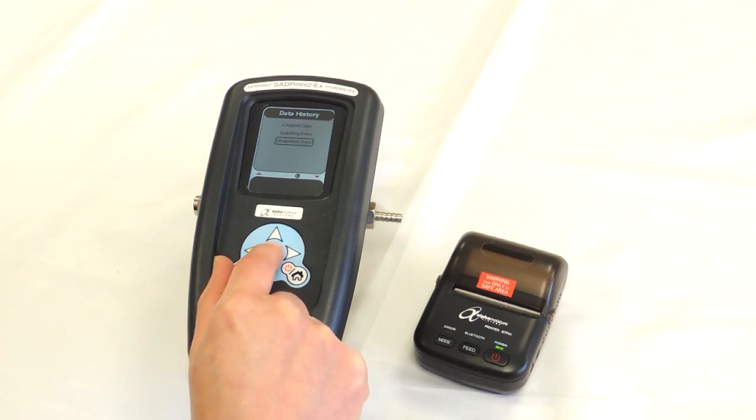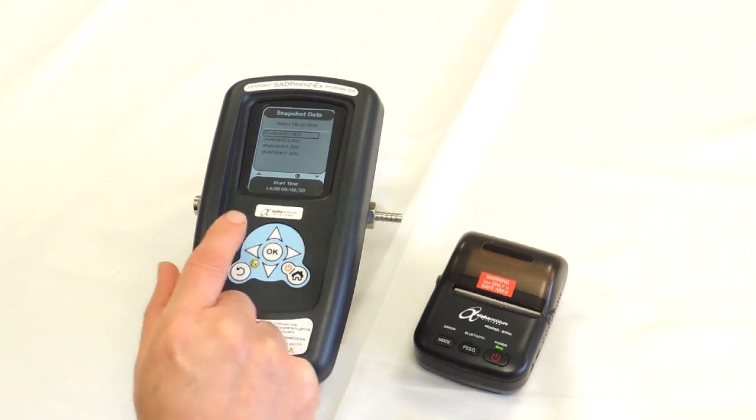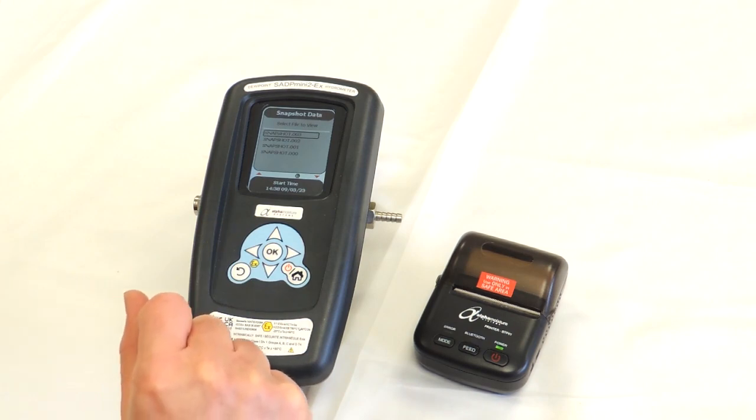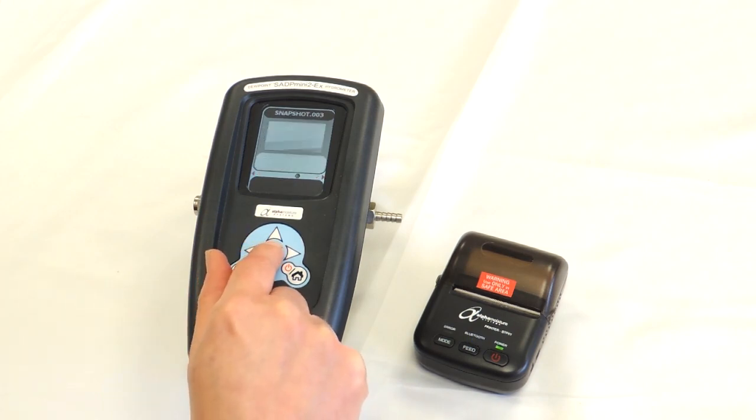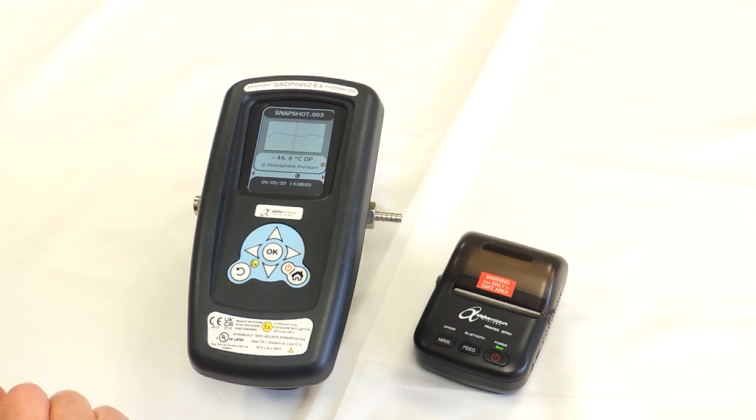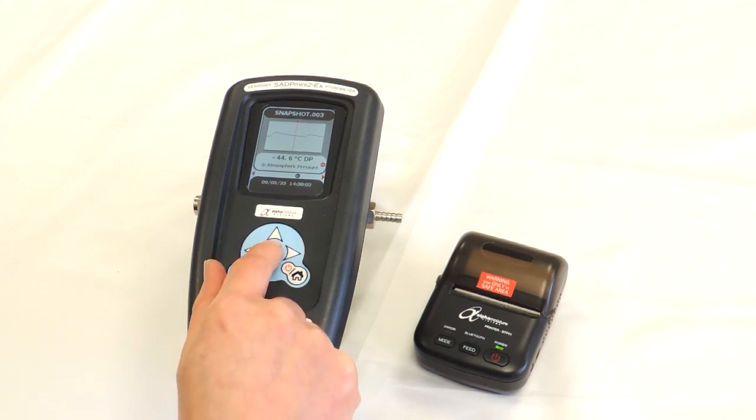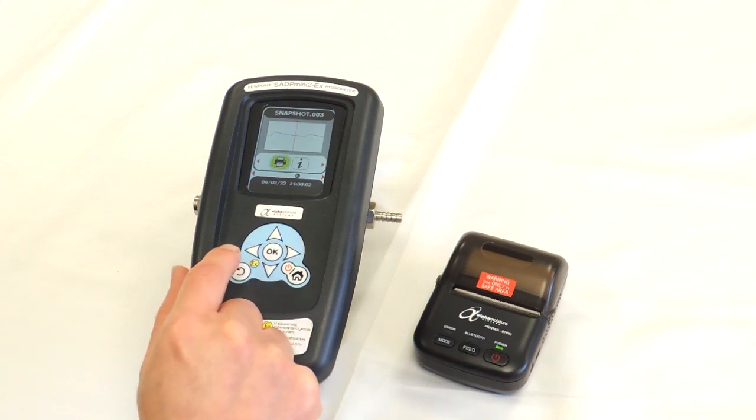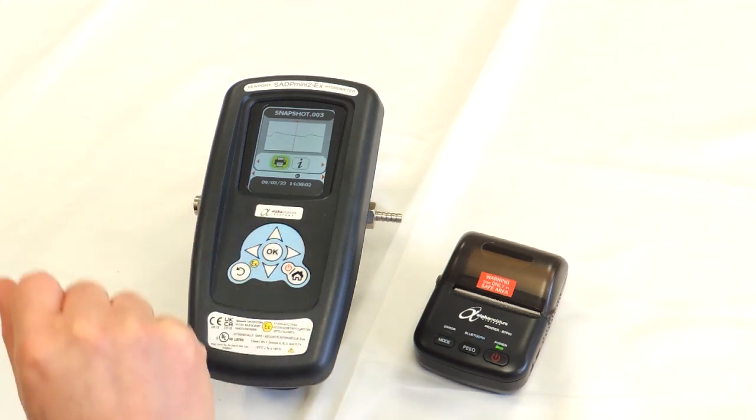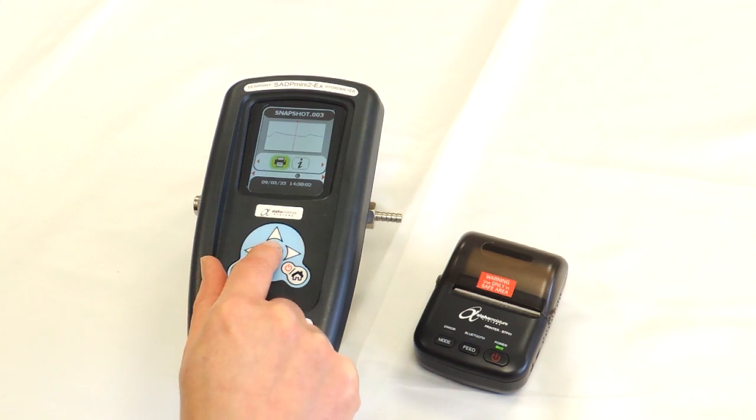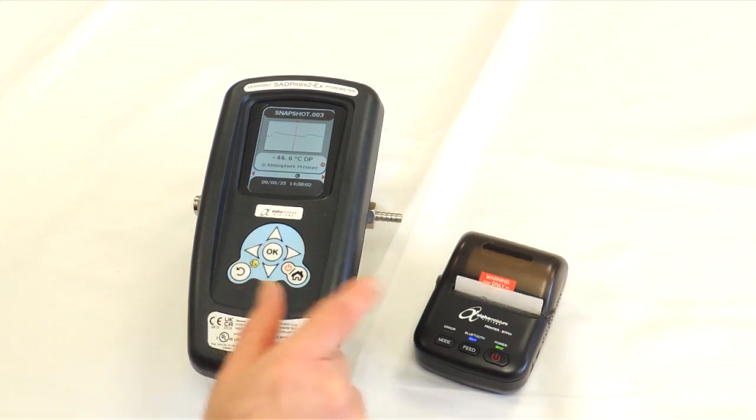This is effectively a screenshot. Press OK and we're going to go to the first file here 003. Press OK and we get a screenshot of a previous logging log that we've done with the device. To print this screenshot it's very simple. Just press OK and get another screen up with two options. You can see the printer's already highlighted so we just press OK and it's now going to print on the printer.